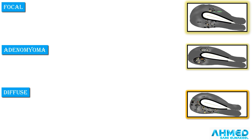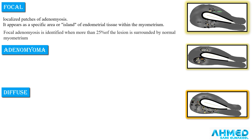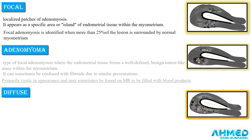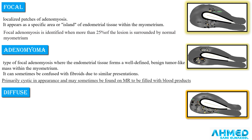There are three types of adenomyosis: focal, adenomyoma, and diffuse. Focal adenomyosis is a localized patch of adenomyosis — it appears as a specific area or island of endometrial tissue within the myometrium. Focal adenomyosis is identified when more than 25% of the lesion is surrounded by normal myometrium. Adenomyoma is a type of focal adenomyosis where the endometrial tissue forms a benign tumor-like mass within the myometrium.